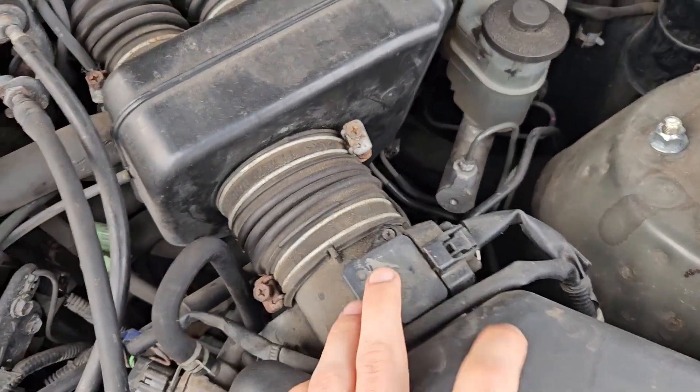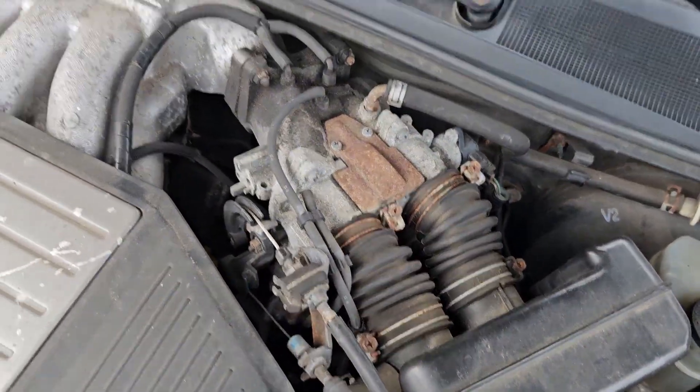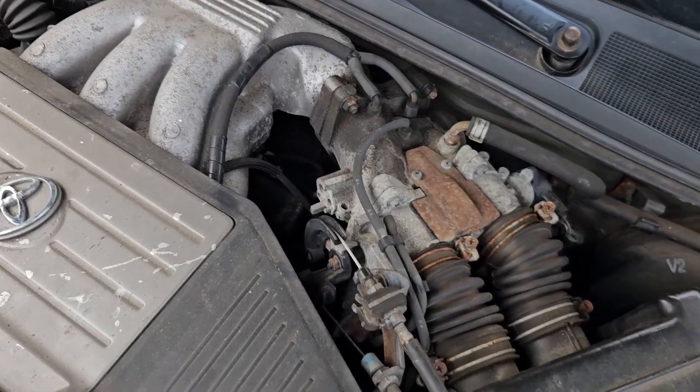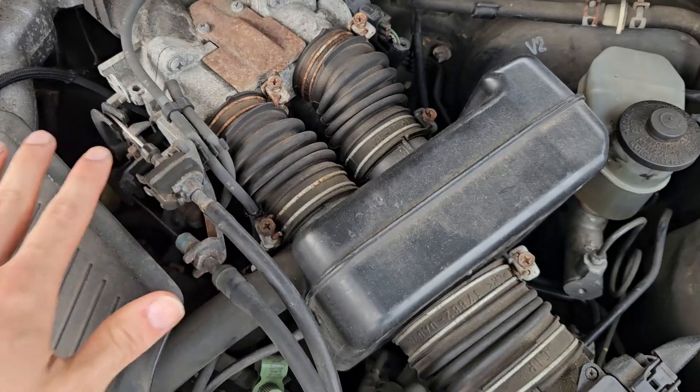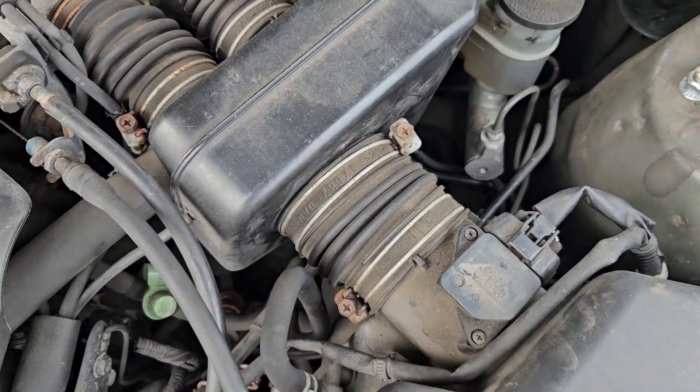So we can see where our MAF sensor is. And there's a lot of intake tubing in between the MAF sensor and the throttle. So all of this, if there was a leak here, it wouldn't be a vacuum leak, but it would make the MAF sensor inaccurate.